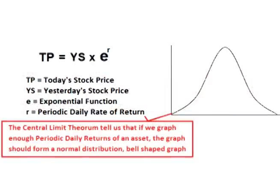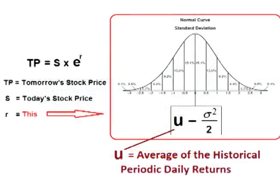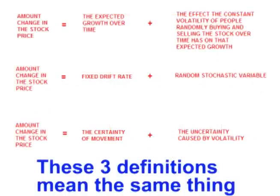Today's stock price equals yesterday's stock price times e raised to r. Because the stock can go up or down any percentage each day, the central limit theorem tells us that if we graph enough of these r values, the graph will form a normal distribution bell-shaped curve. This means the rates of daily change in price in the future will also be normally distributed — using the historical standard deviation and the drift as the mean. We know this is not technically true, but it is close enough for modeling purposes. And that's Brownian motion applied to an asset.